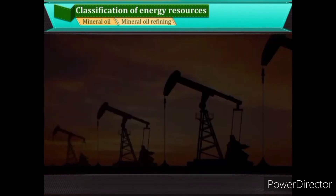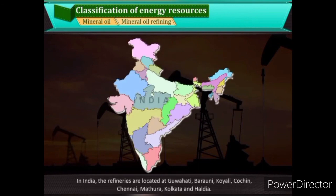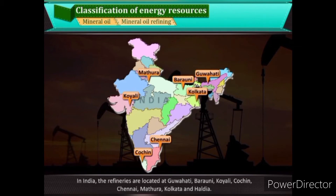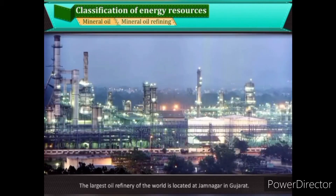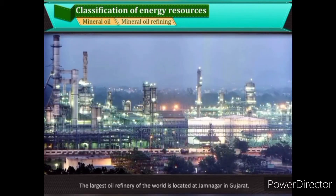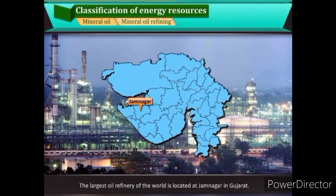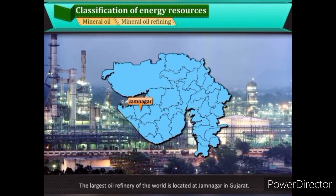Mineral oil refining in India: refineries are located at Guwahati, Barauni, Koyali, Cochin, Chennai, Mathura, Kolkata, and Haldia. The largest oil refinery in the world is located at Jamnagar in Gujarat.